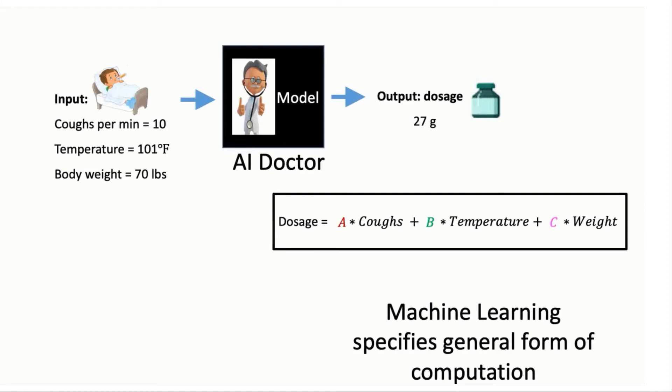For example, for our AI doctor, we might say the general form of the computation will be some number times number of coughs per minute plus some number times the temperature plus some number times the body weight.